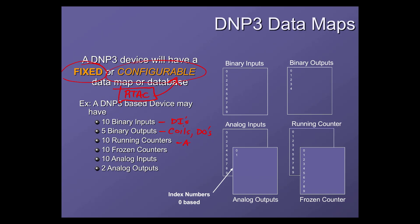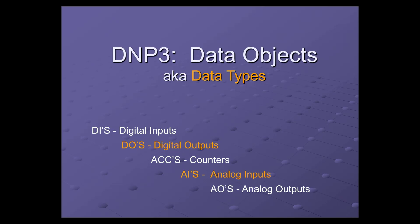When it comes to a DNP3 device, it can have any or all of the different data types found in your object library. In the object library, binary inputs are DIs — digital inputs. Binary outputs are what Modbus would call its coils or DOs. Then you have your counters or accumulators, frozen counters, analog inputs, setpoints or analog outputs, and so on. Even though these objects have different names in the data map, they're essentially all data types you're familiar with — just different names, plus additional functionality like frozen data types or event data types.